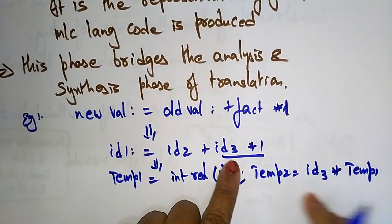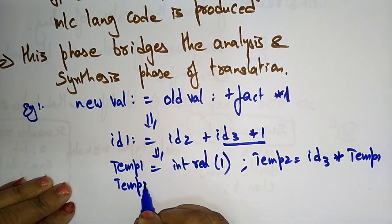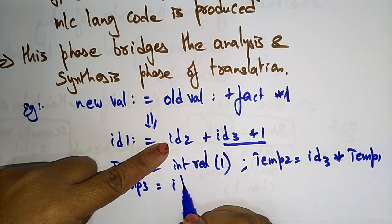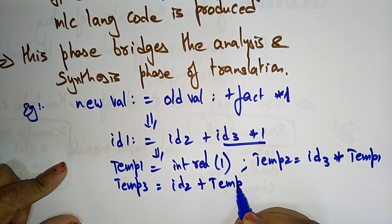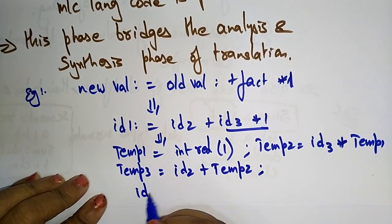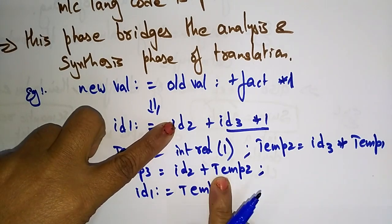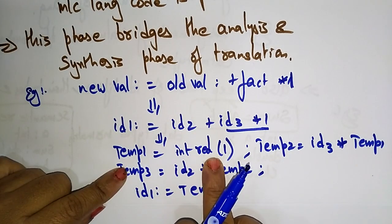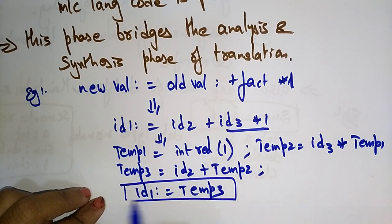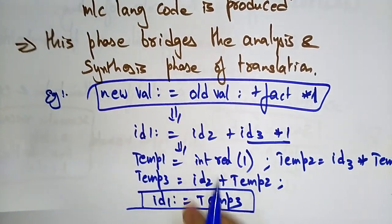So this statement is represented as temp2 = ID3 * temp1. Then temp3 = ID2 + temp2. Finally, ID1 = temp3. So temp3 is ID2 plus temp2, temp2 is ID3 * temp1, and temp1 is 1. With the help of this intermediate code generator, we convert the original statement into this sequence ending with ID1 = temp3.